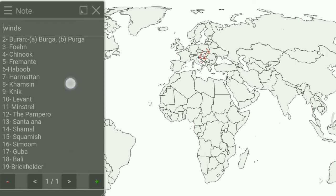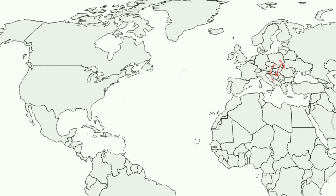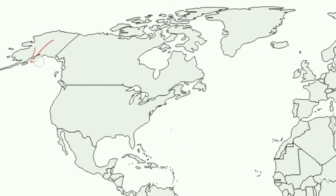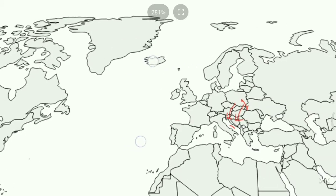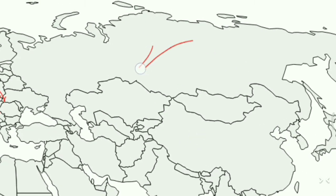Our next wind is Buran. When it blows in the Alaska region it is known as Burga, denoted as 2A on the map. When it blows in the Tundra region it is known as Purga, denoted as 2B on the map.